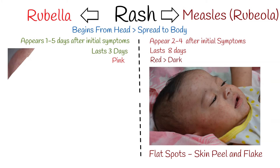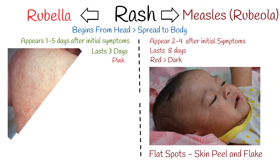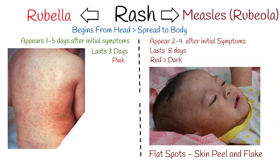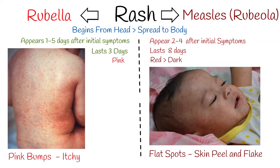A rubella rash often begins on the face and looks like pink bumps. It can be itchy. Rubella symptoms usually last around 10 days.